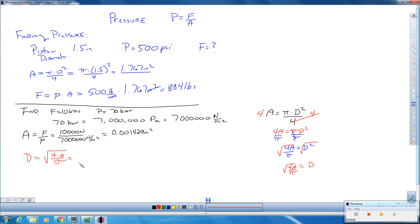Now let's go ahead and substitute in the values that we have. We have 4 times this area, which is 0.001429 meters squared divided by pi. And when you plug all that in, you should get roughly 0.04265 meters.